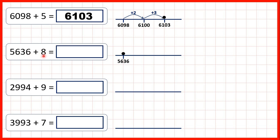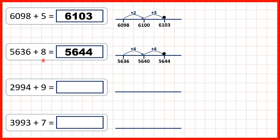Now, 5,636 plus 8. We know our number bonds to 10, so we know that if we add 4, that will take us to 5,640. Adding 4 when we want to add 8 means that we need to add another 4 to give us our answer: 5,644. Notice, if you know that 36 plus 8 is 44, you know 5,636 plus 8 is 5,644.